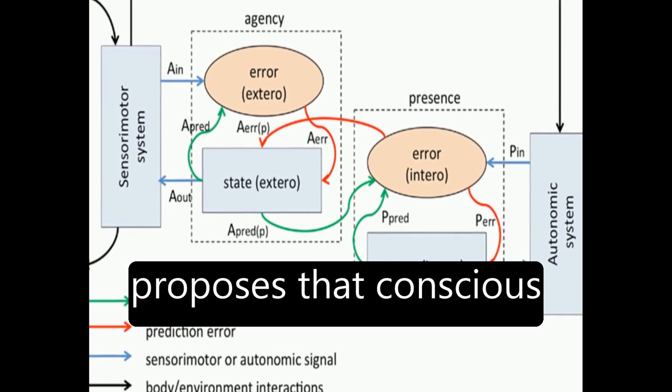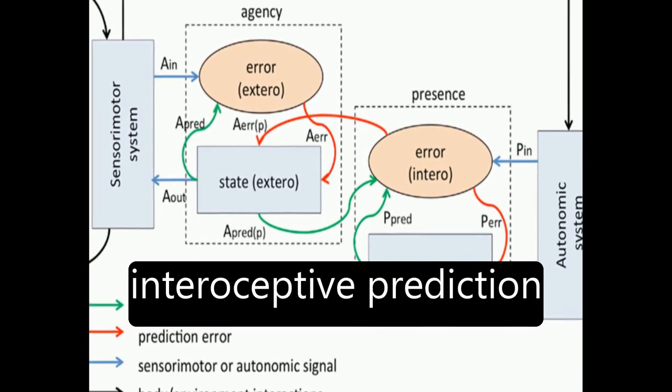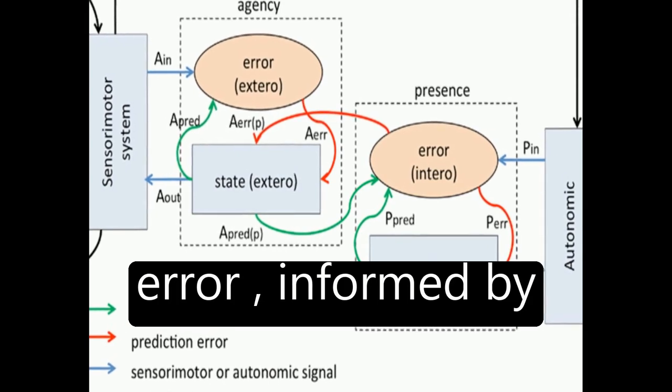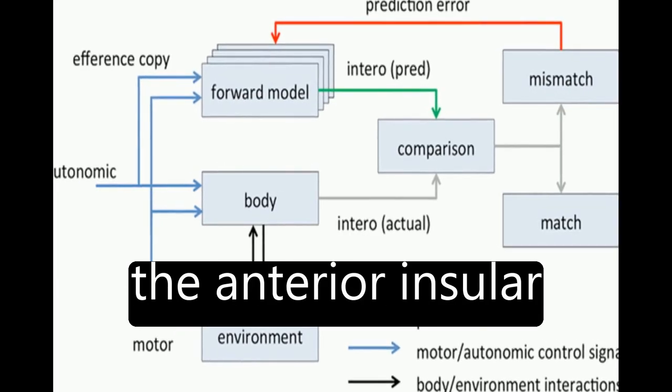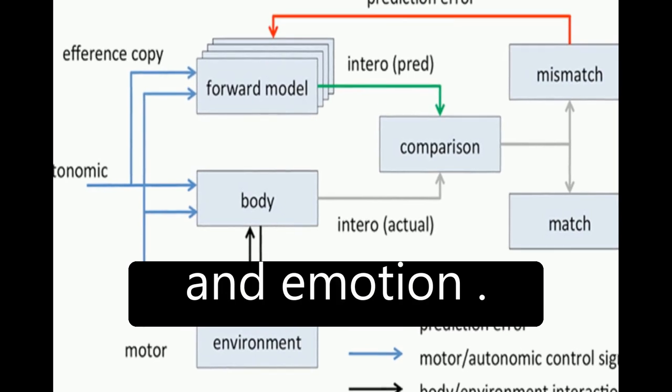The theoretical model proposes that conscious presence is based on interoceptive prediction error, informed by predictive models of agency, hierarchical predictive coding, dopaminergic signaling in cortex, and the role of the anterior insular cortex in interoception and emotion.